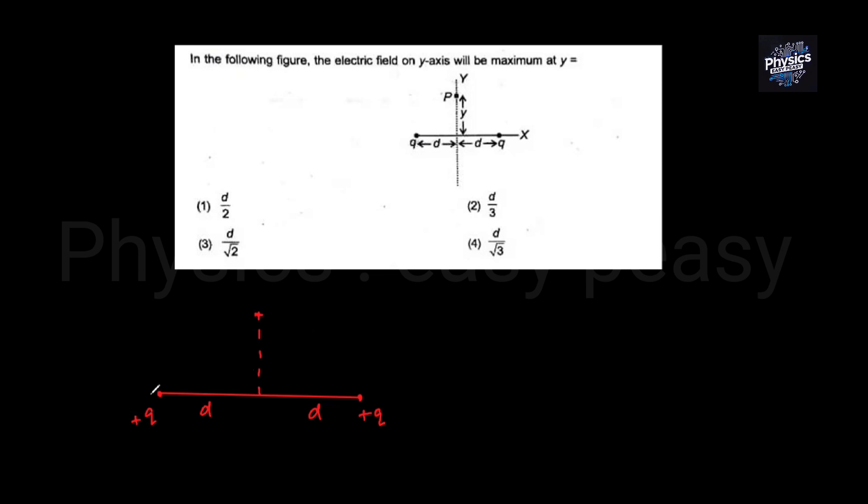We calculate the positive charge electric field outward in this direction. Similarly, the electric field from this positive charge is in this direction. If this distance is d and this distance is y, according to Pythagoras theorem, this distance is r. The value of r will be square root of d squared plus y squared.